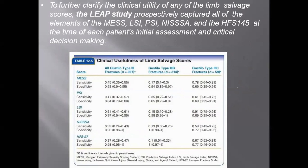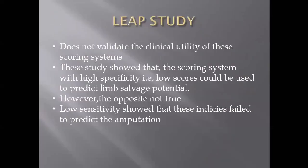To assess the clinical utility of these scoring systems, the LEAP study was conducted. LEAP — Lower Extremity Assessment Project — evaluated all the scoring systems. The conclusion was that it does not validate the clinical utility of these scoring systems, but it showed that scoring systems with high specificity can predict limb salvageability, though they cannot be used to decide amputation.